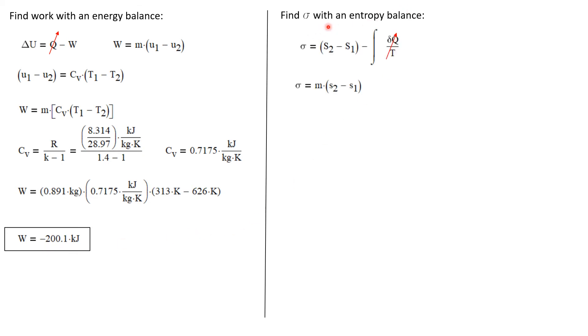Now let's find the entropy production with an entropy balance. Remember that the entropy in a system can increase during a process one of two ways. One is it can be transferred into the system via heat transfer. And secondly, it can be created or produced within the system by irreversibilities. So I'm going to take our entropy balance and rearrange it and solve for the entropy production. And that's just S2 minus S1 minus the integral of DQ over T. But this is an adiabatic process. Q is 0. So this whole term becomes 0. And we have the entropy production is just the mass times the change in specific entropy.